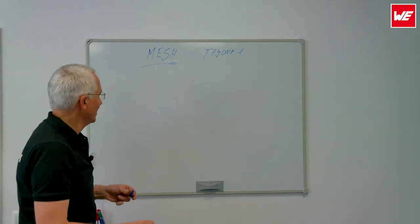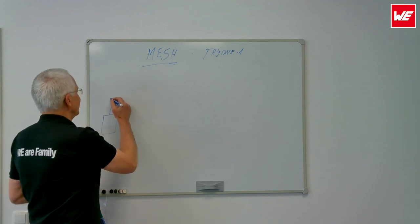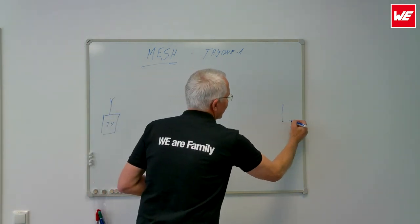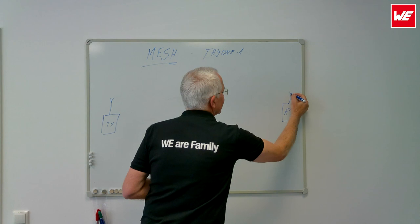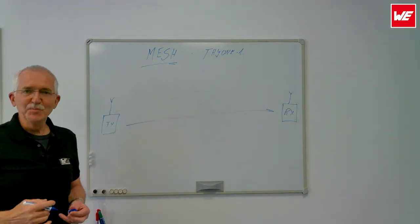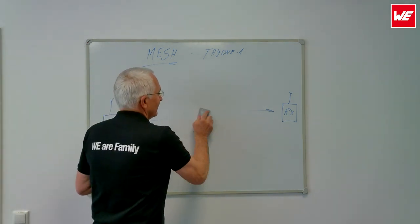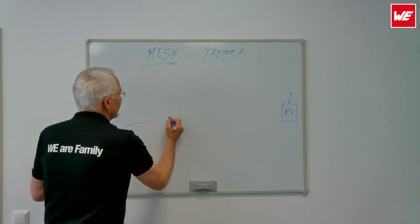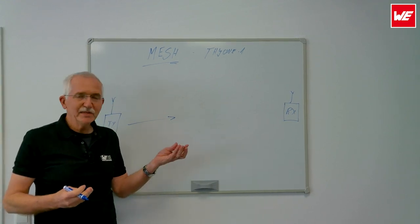Normally I would have a transmitter TX here, and somewhere on the other side I would have my RX, my receiver. In this case transmission is perfect, no problem. But what happens if I don't actually get across to the opposite side and my signal ends here? What I can do is simply install a repeater.